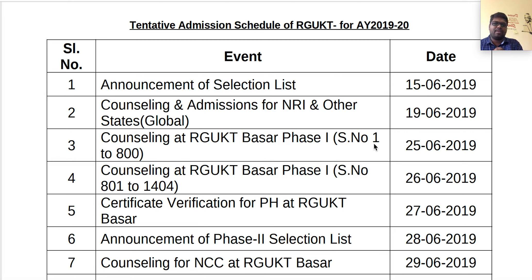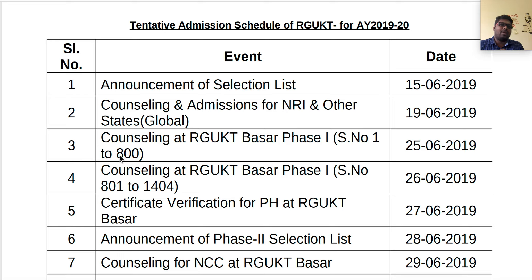You will need to have your certificates ready for counseling at RGUKT. Phase 1 will be completed first. You can provide your data online. If you don't match the data, your admission can be cancelled. If you provide the data online, you will receive confirmation from RGUKT.